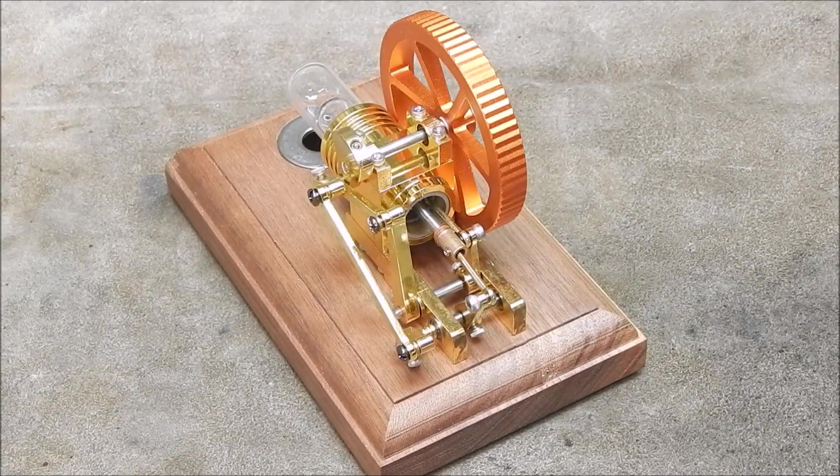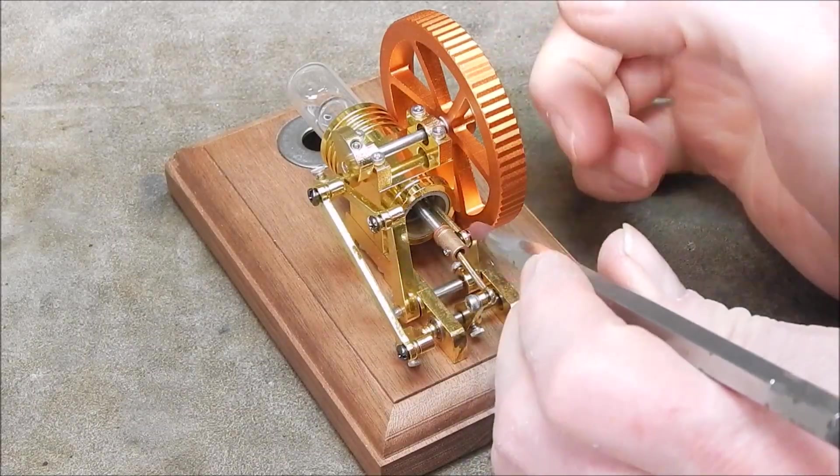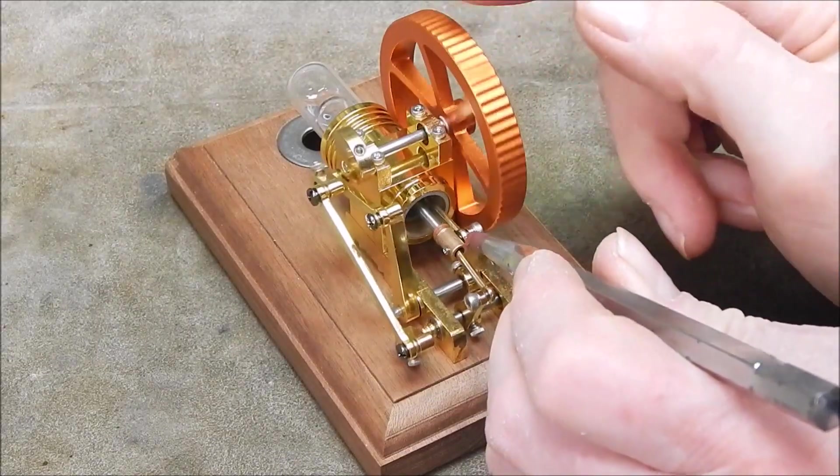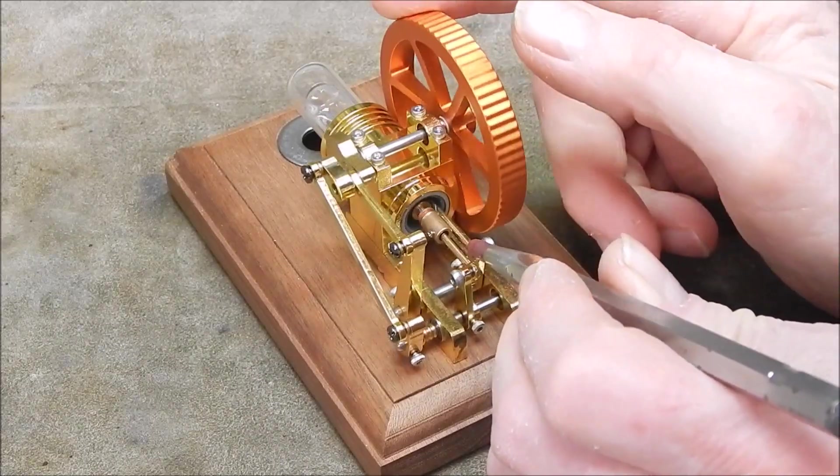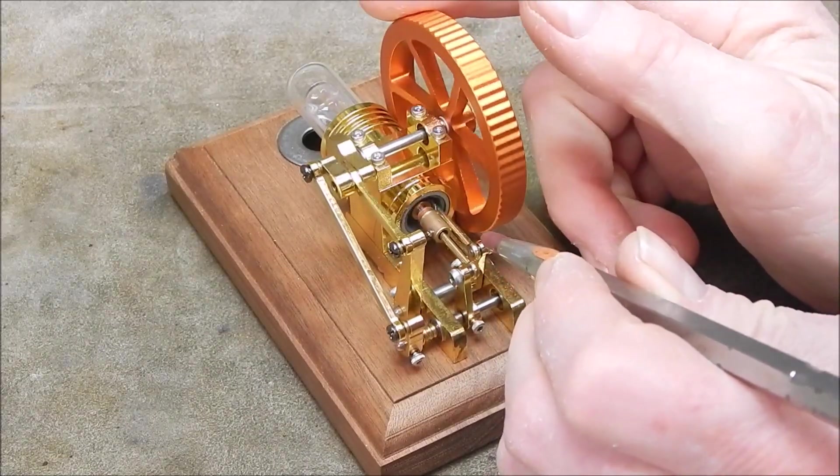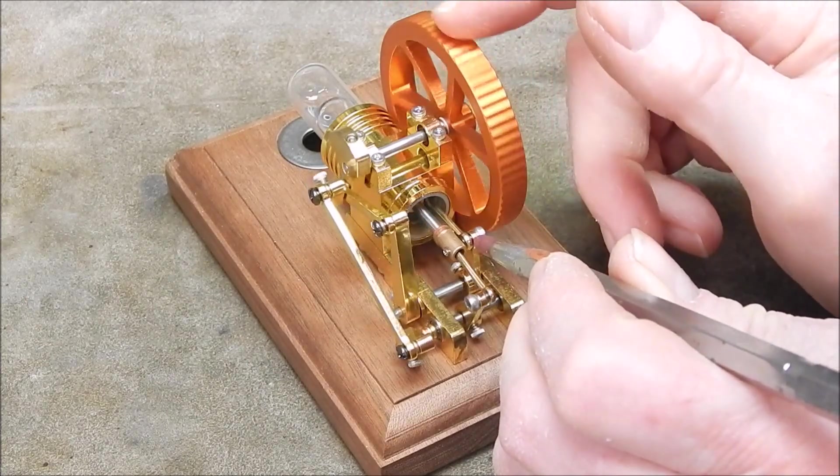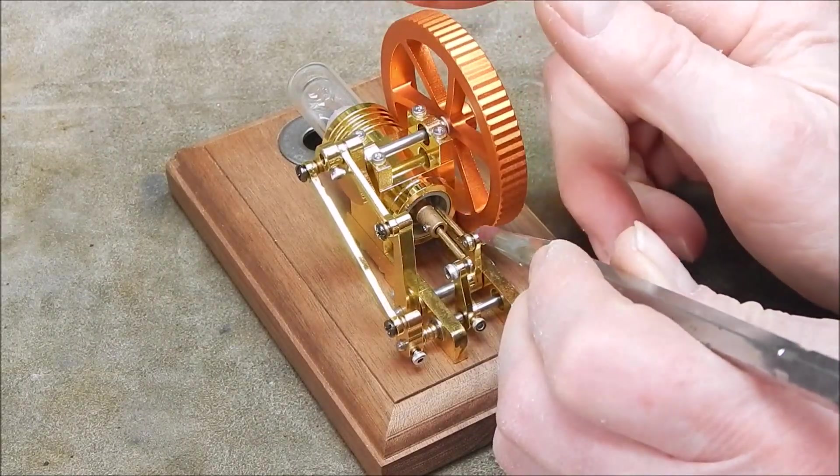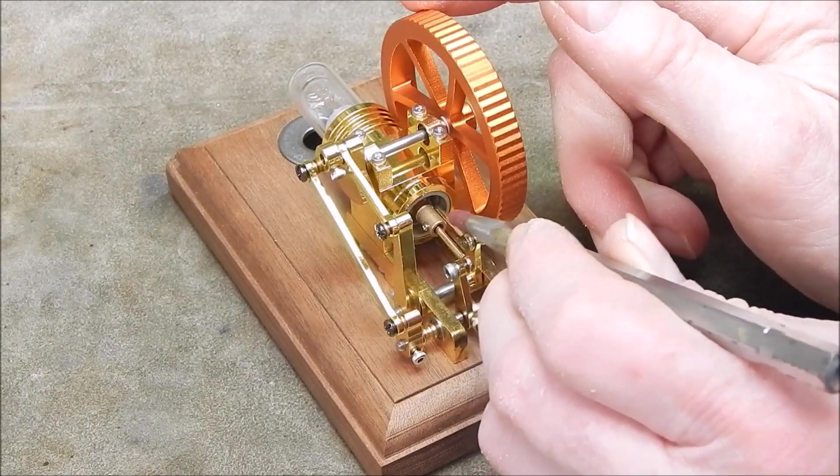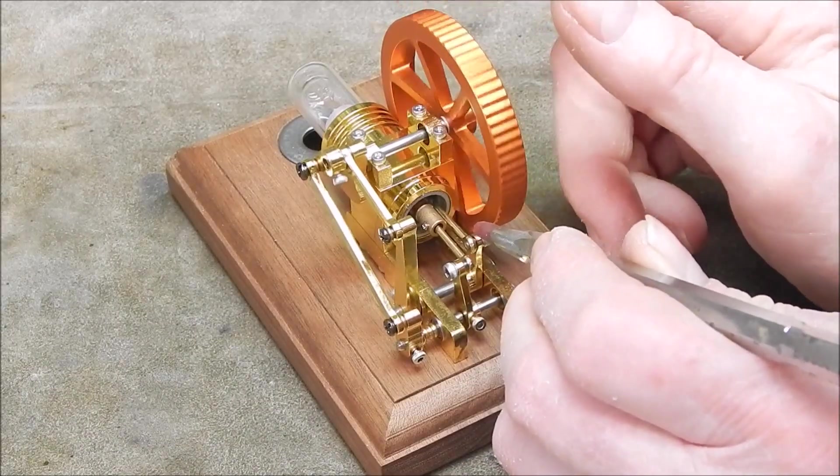You can see the two rods going into the cylinder. One is the displacer and the other one is the power piston. So that would be displacer, that one would be power piston.